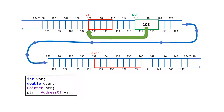Now that the pointer is pointing to the variable, why do I want to do this? Because I want to be able to access things remotely. You know what functions are — if you create a variable inside a function, that variable is not visible to any other function. If you're in main and call a function, the variables in main are not accessible to that function. We can simply pass the addresses of those variables into functions so they can remotely access variables outside their scope. Pointers are really helpful.